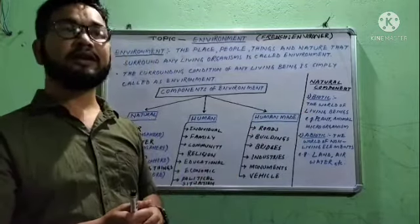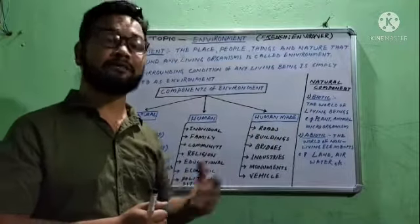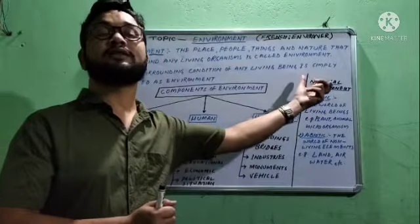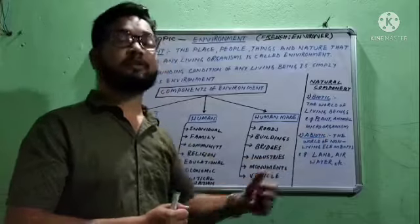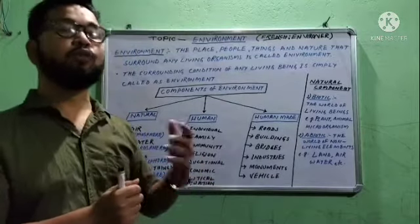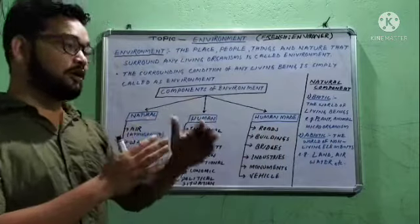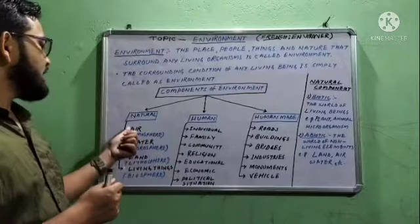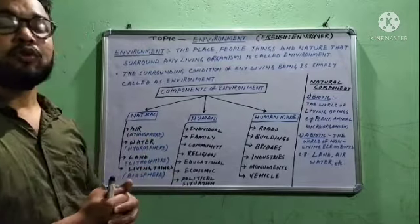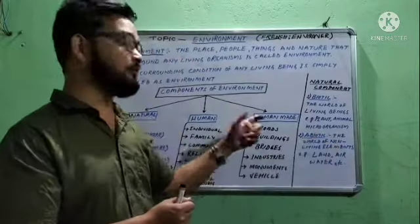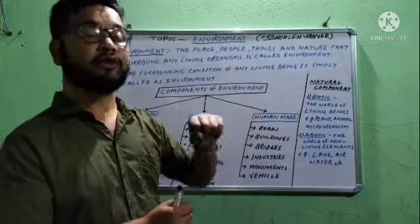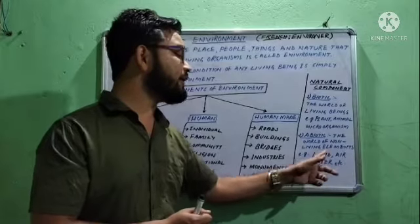What are the living beings in the environment? Plants have life, animals have life, and microorganisms — small organisms — also have life. These are the biotic part of the natural environment. Next is the abiotic part — abiotic means which do not have life, which cannot grow, which cannot move. Air cannot grow, so it is abiotic. Water does not have life. Land area does not have life. The world of non-living elements is called the abiotic components of environment. Examples include land, air, water, etc.